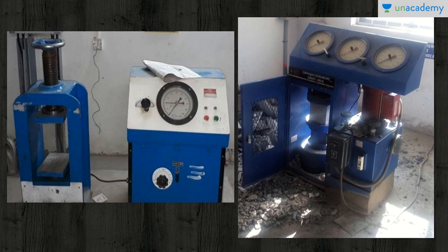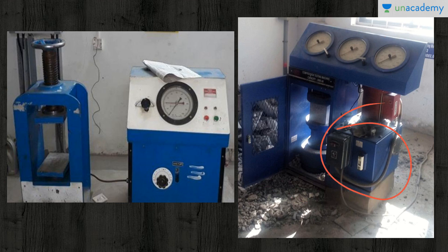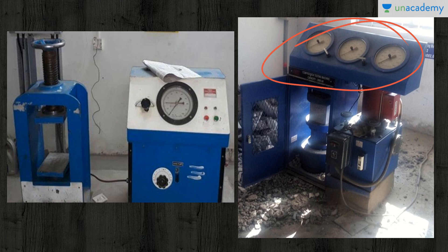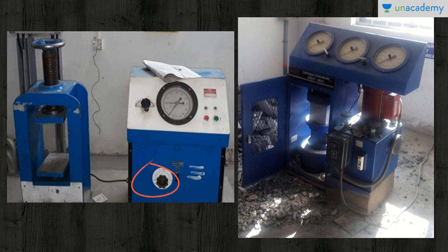These are the two types of compression testing machine you can find in the labs. One type has a loading area and the controlling unit as a separate unit, but this other type is more compact — the controlling unit, loading area, and all the dials are integrated in a single unit. Please don't get intimidated by seeing either of them in the laboratory.